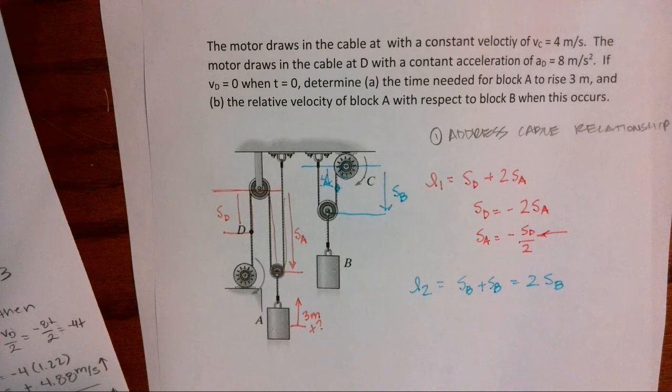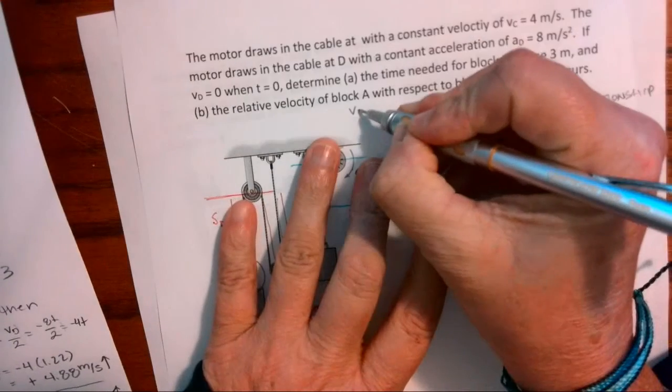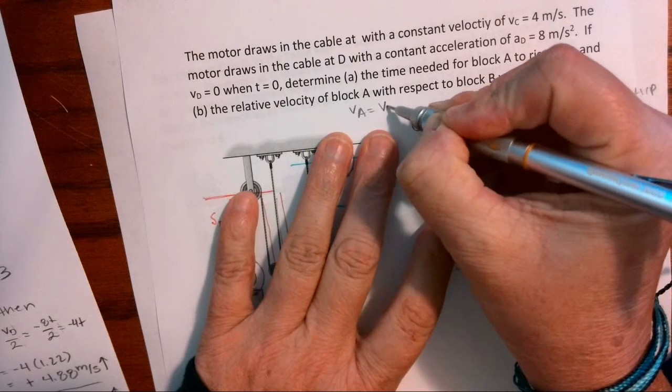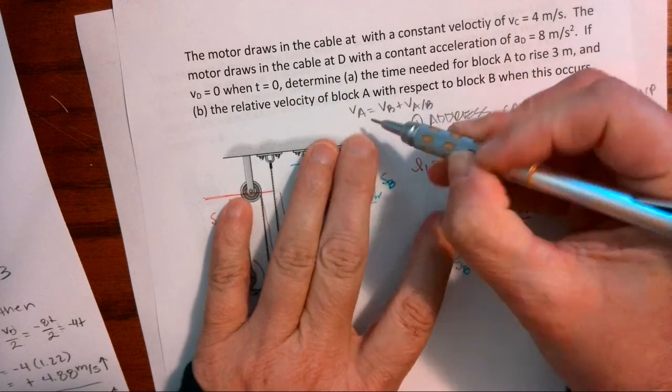And this kind of goes back to what we talked about if you're passing a car and you have that relative velocity. So when we look at this, we're going to have the velocity of A compared to B. So the velocity of A with respect to B.